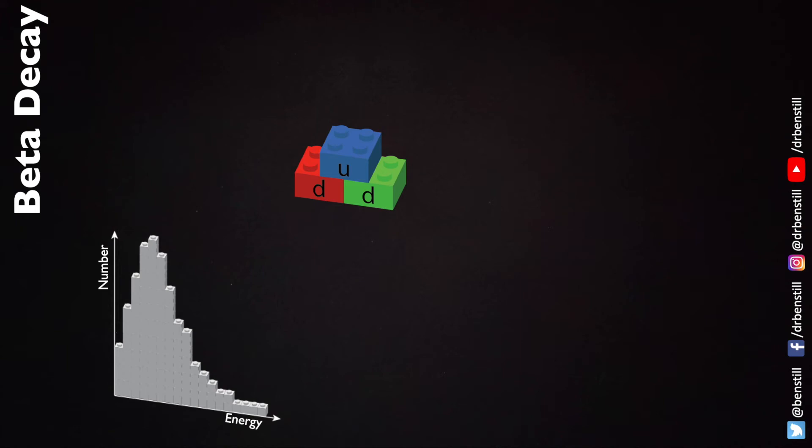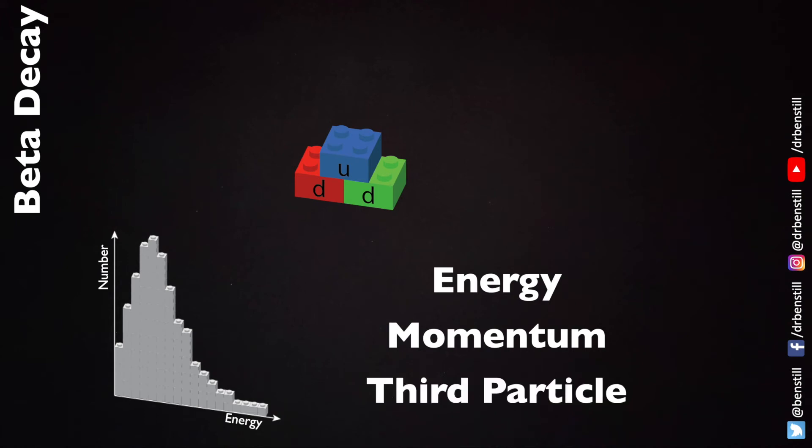There were three possible explanations as to why this might be. One was that energy was not being conserved in beta decay which seemed like a very bold step considering it seems to be conserved in everything else that we see. Two, that momentum isn't conserved in beta decay, again a very bold step because momentum seems to be conserved everywhere else in physics. Or a third particle is being emitted. This third particle could take away a different proportion of the energy each time leaving the electron with less energy than expected.